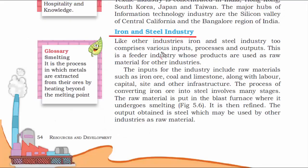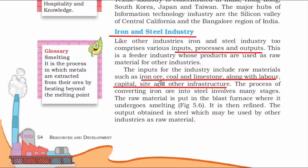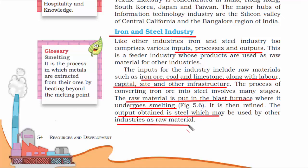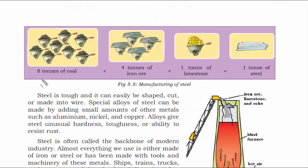Let us read about some specific industries. First, iron and steel industry — it has inputs, processes, and outputs. The inputs include raw materials such as iron ore, coal, and limestone, along with labor, capital, site, and other infrastructure. In terms of process, it is the blast furnace in which smelting undergoes and raw material is converted into solid steel. The output is steel, used by industries across sectors. Eight tons of coal plus four tons of iron ore plus one ton of limestone gives you one ton of steel sheet.